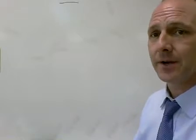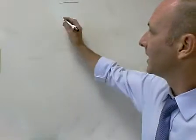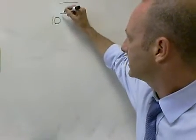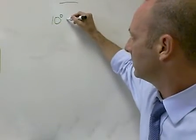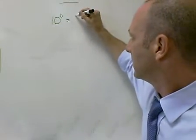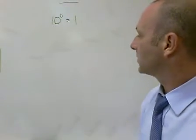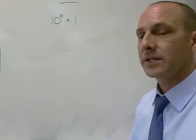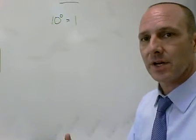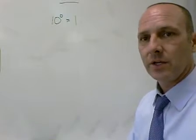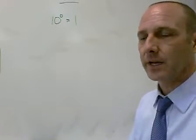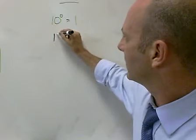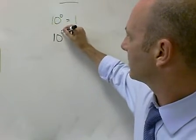Exponents really just follow a pattern. If you look at 10 to the 0, that's the first part of the pattern. That really just means 1. Anything to the exponent of 0 is always 1, so no matter what you've got with an exponent of 0, it'll always be 1.